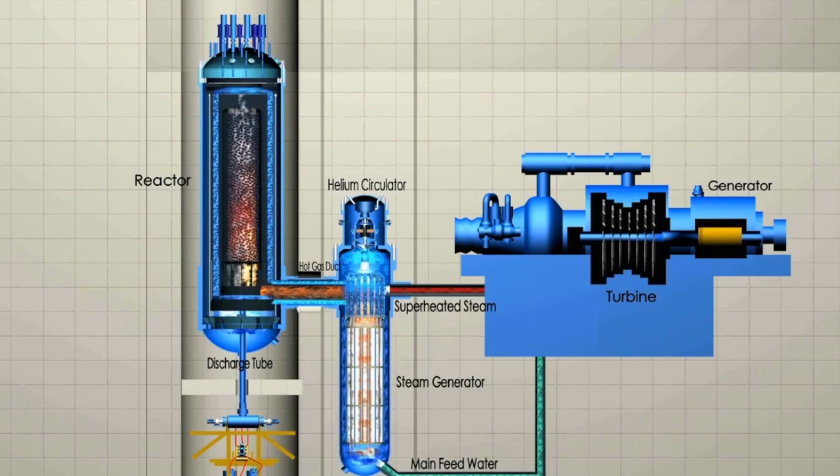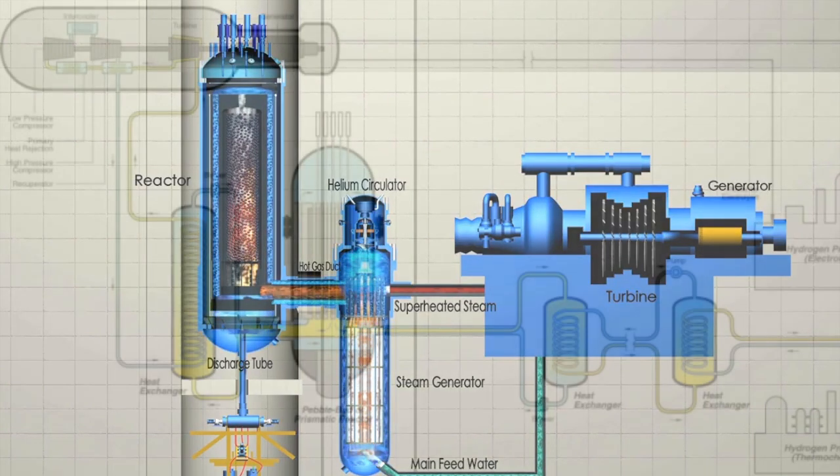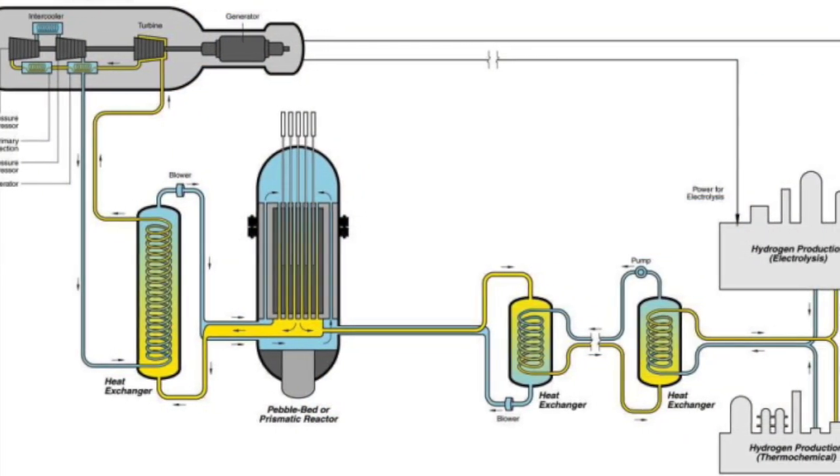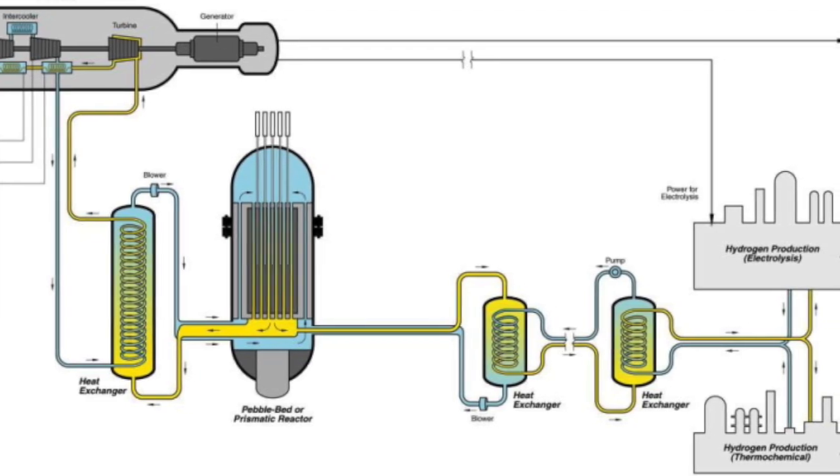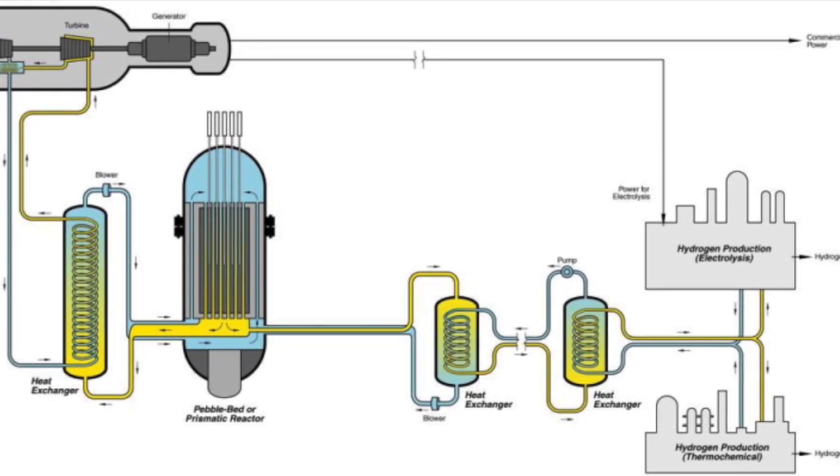And as the gas exiting the turbine is still at a relatively high temperature, it can be used for industrial heating or cogeneration via secondary steam turbine or Stirling engine cycle. This combination of a Brayton cycle with a high inlet temperature and cogeneration capacity allows pebble bed reactors to achieve high energy conversion efficiencies of up to 50%.